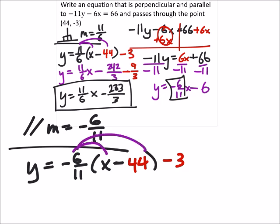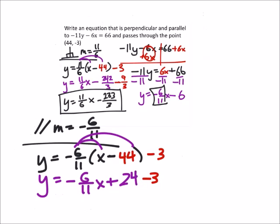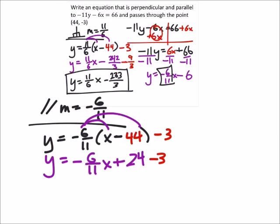So if we distribute the negative 6 11ths, we get y is equal to negative 6 11ths x. And this is going to be plus 24 minus the 3, which just gives us y equals negative 6 11ths x plus 21.